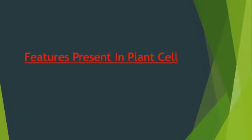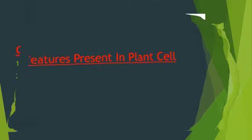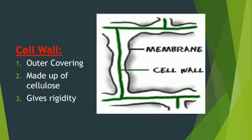In today's topic we are going to study those features of the cell which are specifically found in the plant cell. On the screen you have the diagram of a cell wall — this is the first feature which is present in the plant cell and is absent in the animal cell.